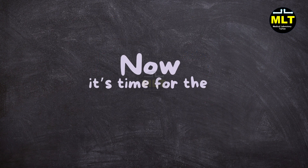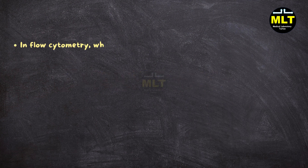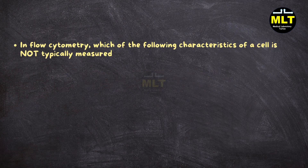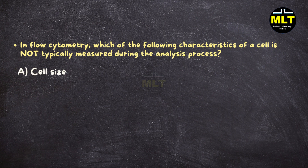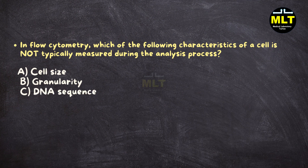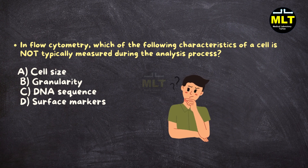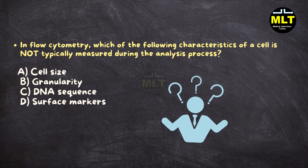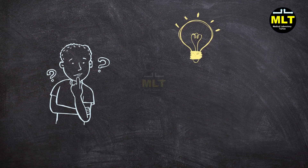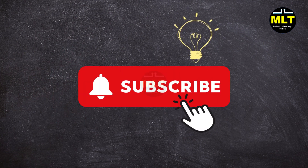Now it's time for the question. In flow cytometry, which of the following characteristics of a cell is not typically measured during the analysis process? A. Cell size. B. Granularity. C. DNA sequence. D. Surface markers. Think carefully about your answer, as it relates to the key principles of how flow cytometry works. If you found this video helpful, be sure to like and subscribe for more on medical lab technology and innovations.